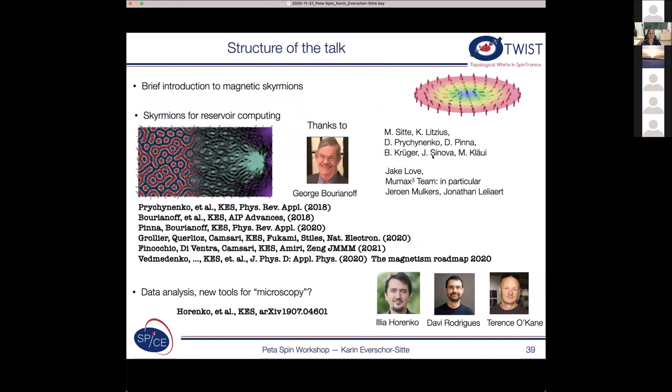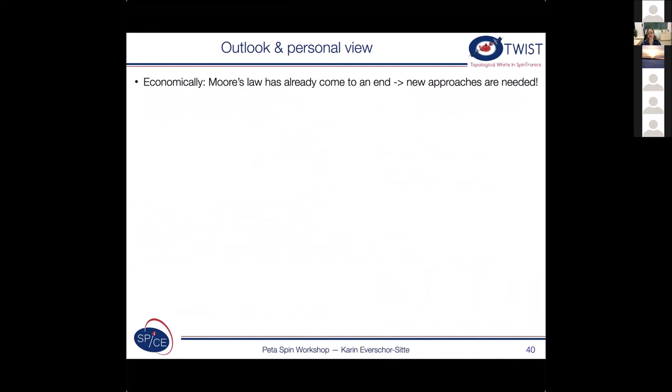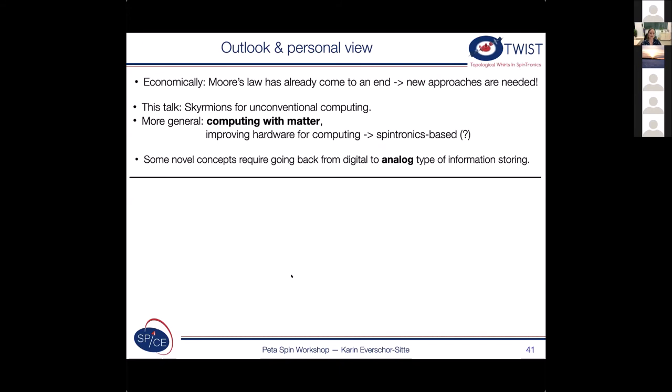So I've talked about this first part now. And let me come to the second part. But for this, let me give a little bit of introduction. So we all know that we somehow need some new approaches. So what I talked so far was to use skyrmions for unconventional computing or more generally to compute with matter or to improve hardware for computing, which could be spintronics-based. And maybe some of these novel concepts require also going back from digital to analog type of information storing. But if you think of it from a different perspective, then still tremendous progress has been made in computer science and particular machine learning. Even though if some of the basic ideas are more than 50 years old, there has been enormous progress relying on these graphics cards.